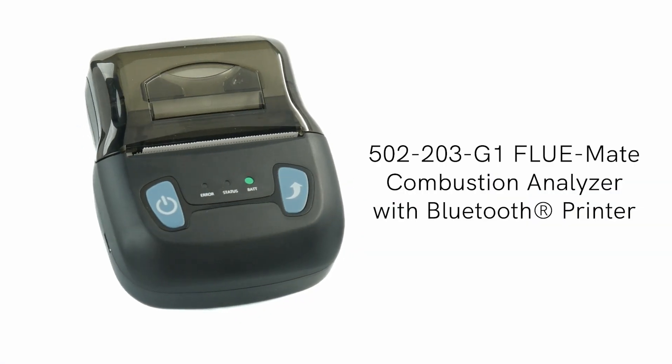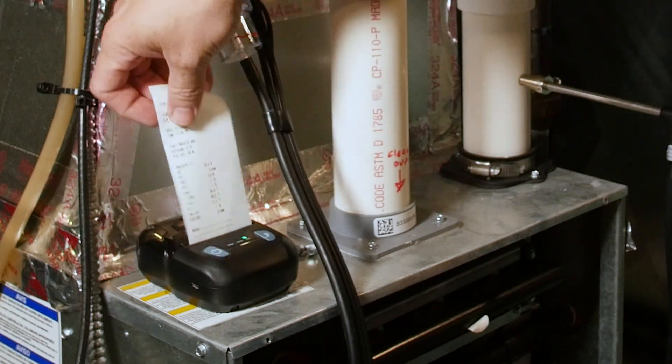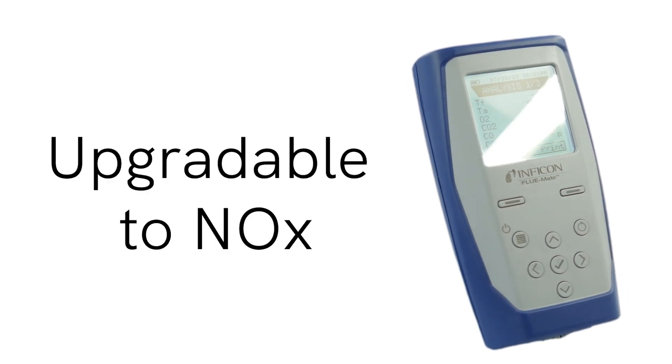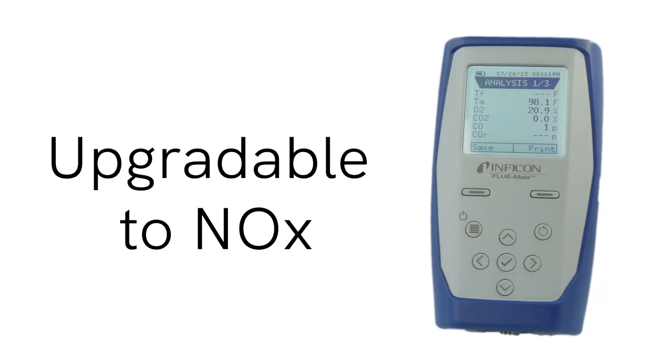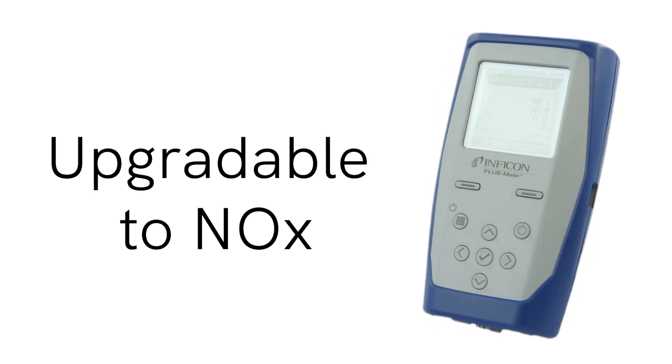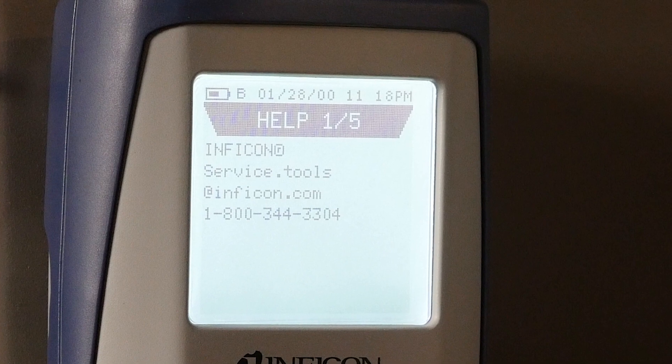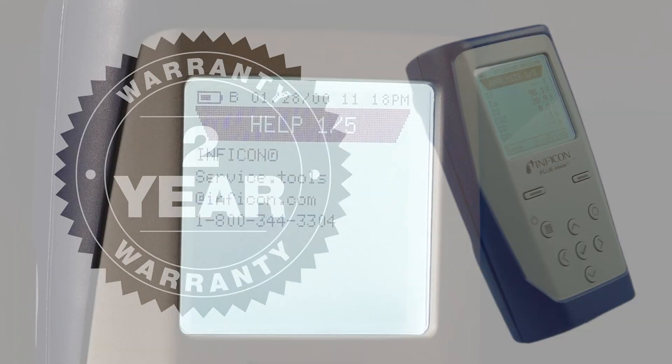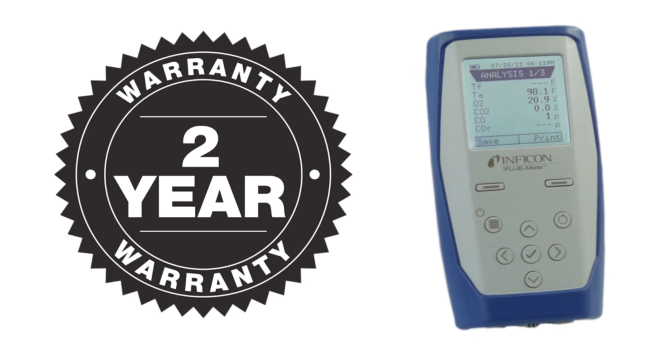An optional Bluetooth printer is available for easy printing of analysis records on the job. Need to measure nitrogen oxide? No problem. Flumate can be factory upgraded with a NOx sensor. Calibrate Flumate annually to ensure optimal performance. For calibration services, contact Inficon or your local distributor. Flumate is protected by a world-class two-year warranty to give you peace of mind.